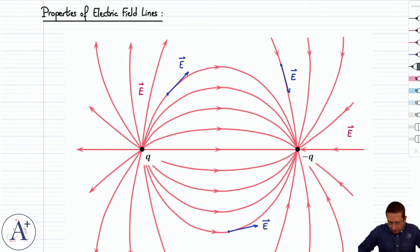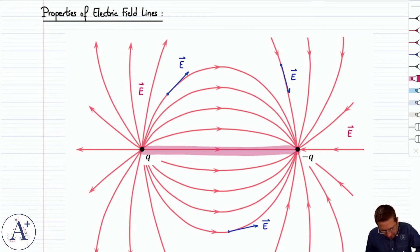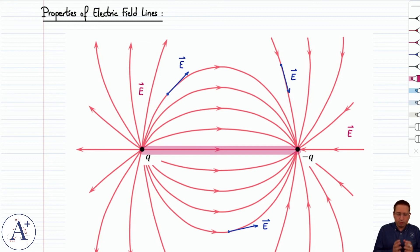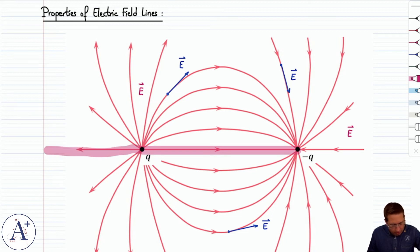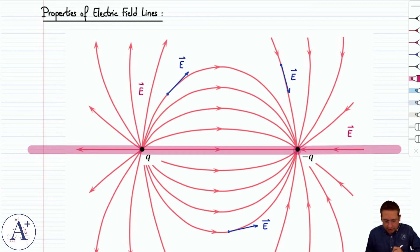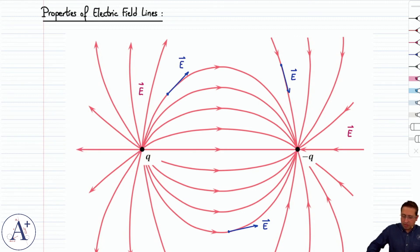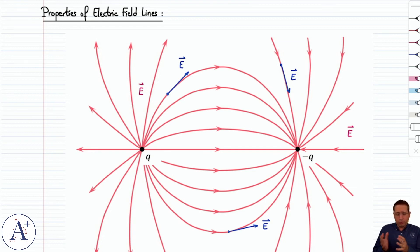The third property is that electric field lines either originate at a positive charge and end at a negative charge — from plus to minus — or start at a positive charge and go all the way to infinity, or originate at infinity and end on a negative charge. So there are three options: plus to minus, positive charge to infinity, or infinity to negative charge.